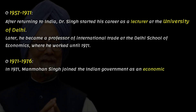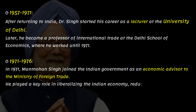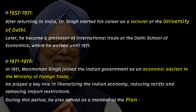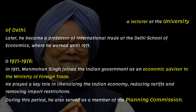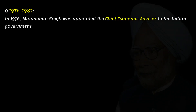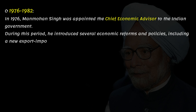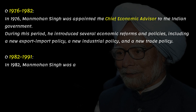In 1971, Manmohan Singh joined the Indian government as an economic advisor to the Ministry of Foreign Trade. He played a key role in liberalizing the Indian economy, reducing tariffs and removing import restrictions. During this period, he also served as a member of the Planning Commission. In 1976, Singh was appointed the Chief Economic Advisor to the Indian government, during which he introduced several economic reforms and policies, including a new export-import policy, a new industrial policy, and a new trade policy.